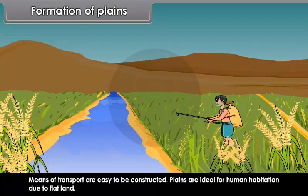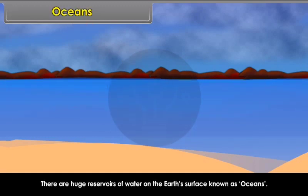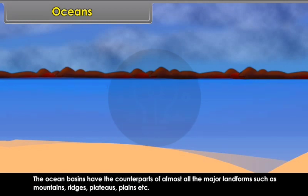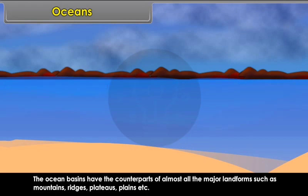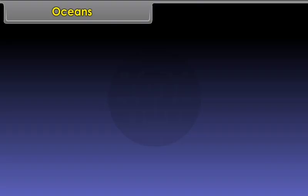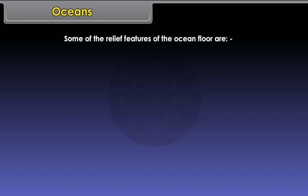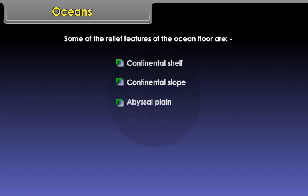Oceans. There are huge reservoirs of water on the earth's surface known as oceans. The ocean basins have the counterparts of almost all major landforms such as mountains, ridges, plateaus, and plains. Some of the relief features of the ocean floor are: continental shelf, continental slope, abyssal plain, ocean trench, submarine ridges, and islands.